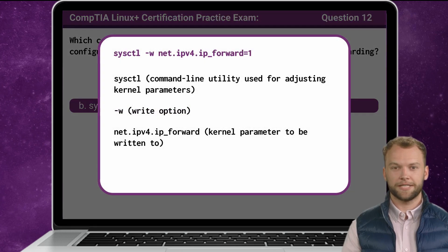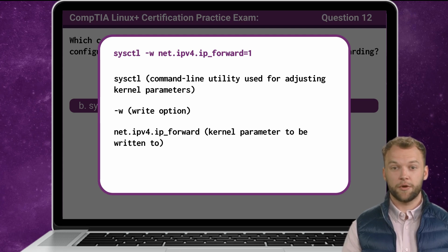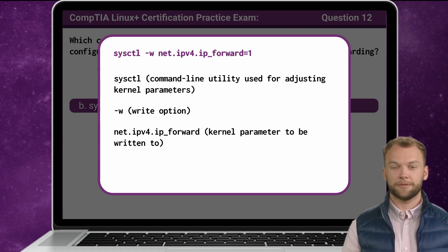The command sysctl -w net.ipv4.ip_forward=1 serves to configure a specific kernel parameter in a running Linux system. Here's a breakdown of its components. First, sysctl is a command-line utility used for adjusting kernel parameters. The -w option instructs sysctl to write a specified value to a designated kernel parameter. In this case, net.ipv4.ip_forward represents the specific parameter being modified, which controls the kernel's behavior regarding the forwarding of IPv4 packets between network interfaces. By assigning a value of 1 to this parameter, the command effectively enables IPv4 packet forwarding within the system.